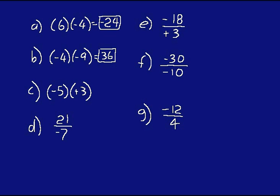On C, negative 5 times positive 3 — different signs, so your answer is negative 15. On D, different signs, so your answer will be negative 3. You can undo the division to check your answer: do negative 7 times negative 3, that equals a positive 21. You can always check your work that way on these.